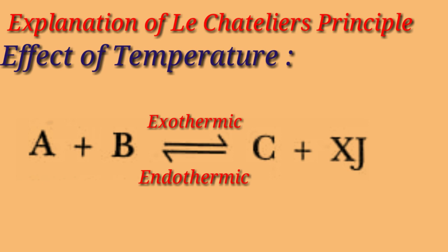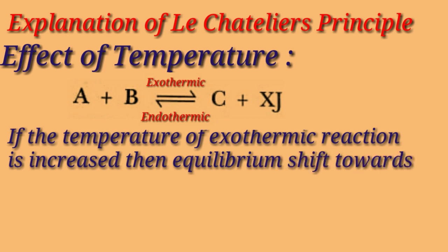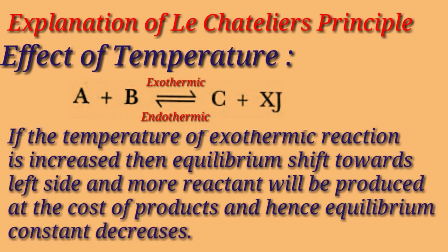Here, the forward reaction is exothermic — that is, the product is formed with the evolution of heat. A and B react with each other to form C, and X joules of heat is released. If we increase the temperature of such a reaction, then product C and liberated heat X will combine and get converted into reactant. So, if the temperature of an exothermic reaction is increased, then equilibrium shifts towards the left and more reactant will be produced at the cost of product. More and more product gets converted into reactant, and hence the equilibrium constant value decreases.